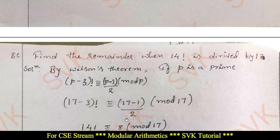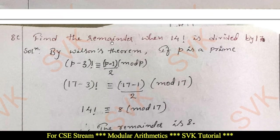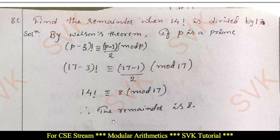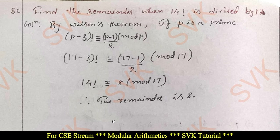Moving on to question number 8c, the last question of this module: find the remainder when 14! is divided by 17, using Wilson's theorem. If p is prime, then (p − 3)! ≡ (p − 1)/2 (mod p). Substituting p = 17: (17 − 3)! ≡ (17 − 1)/2 (mod 17), which gives 14! ≡ 8 (mod 17). Thus the remainder is 8 — that is the required solution.